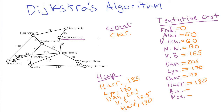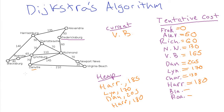Virginia Beach is dequeued next at cost 165. Checking Newport News via Virginia Beach — not better since Newport News is already 130. Checking Danville via Virginia Beach: 165 plus 210 is 375, much worse than 205. So it's not faster to get to any city via Virginia Beach except Virginia Beach itself. Done with Virginia Beach.